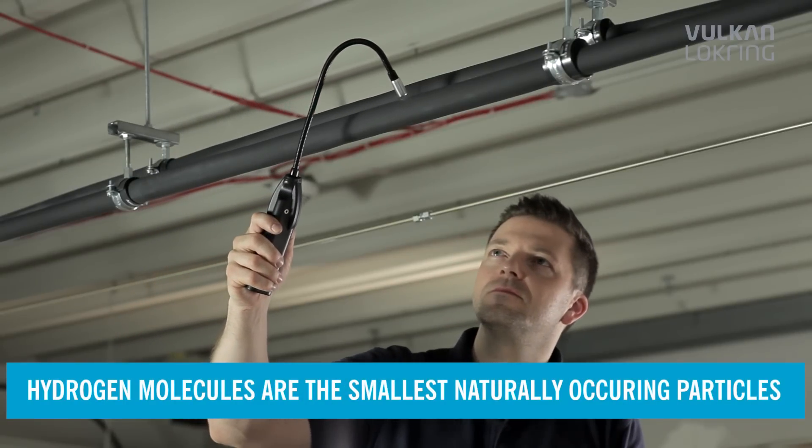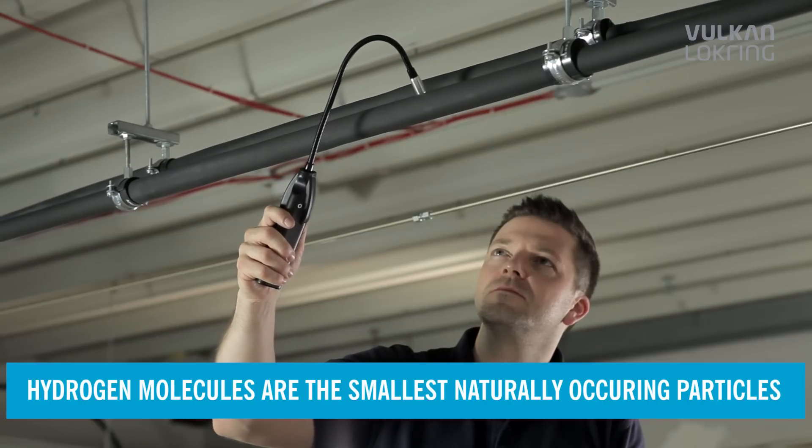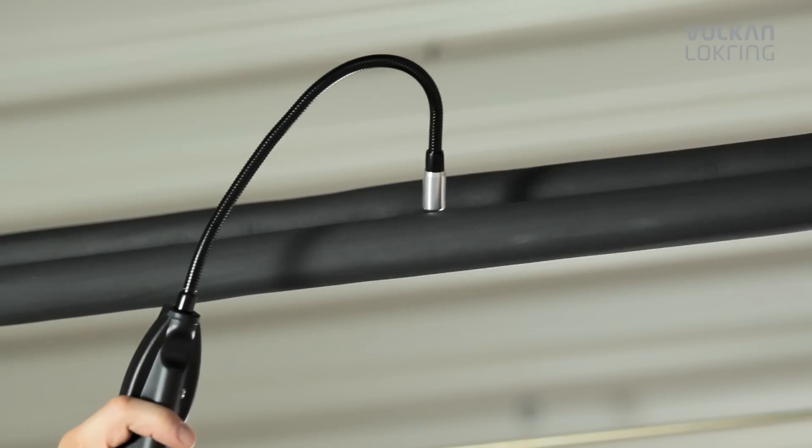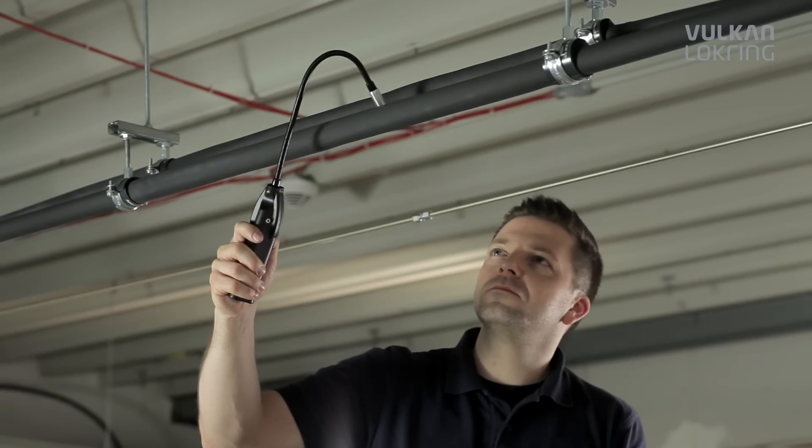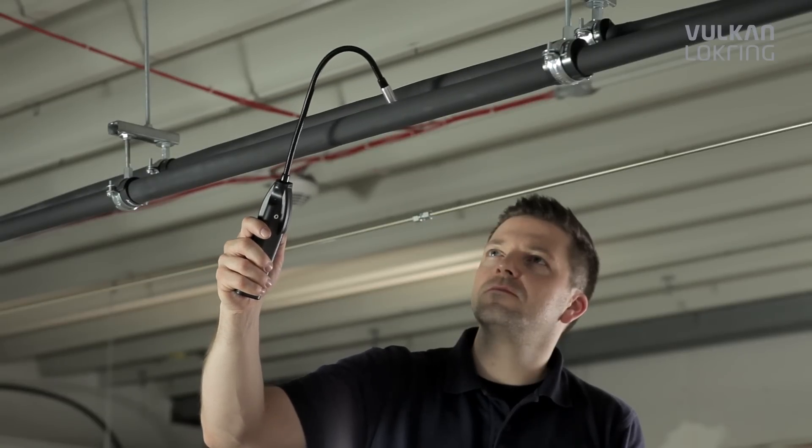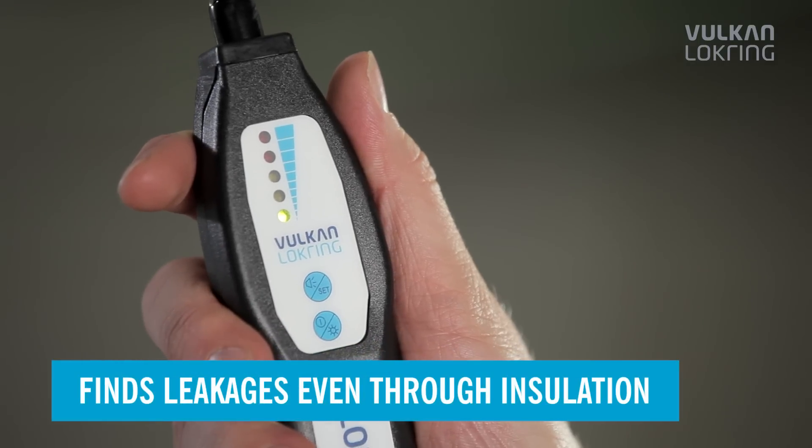Hydrogen molecules are the smallest naturally occurring particles and escape from even minimum leaks. So you can use the LOCTRACE TLD500 and LOCTRACE TLD1000 hydrogen leak detectors to trace leaks reliably, even through insulation, screed and foam.